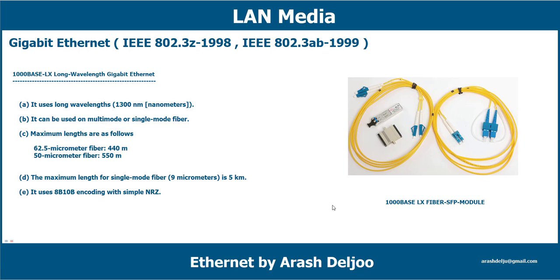In single-mode fibers, the diameter is between 8 and 9 micrometers. If you use 9-micrometer single-mode fiber, you will have 5 kilometers of cable segment length. If you use 8-micrometer fiber, you will have more than that — potentially up to 10, 20, or more kilometers for the maximum segment length.